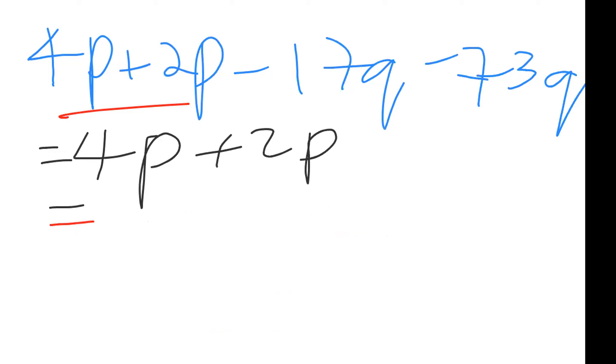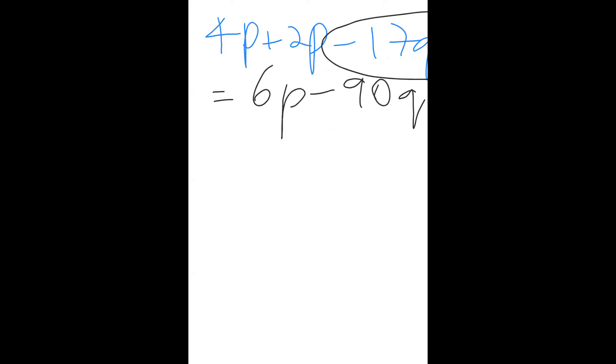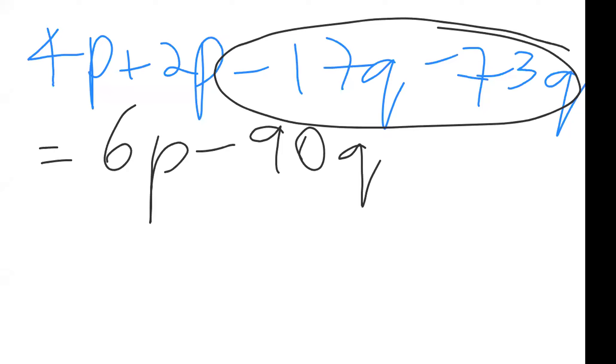When you are putting the like terms together, you're doing that in the same line. 4p plus 2p, these are already like terms, so 4p plus 2p gives 6p. Same signs add and keep, so this is not just 90q, this is negative 90q. Add the numbers, keep the sign. You cannot be subtracting the numbers. Walk yourself through the rules when you're doing the answers.